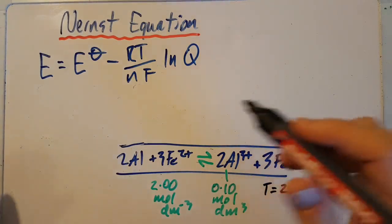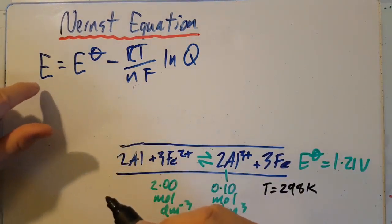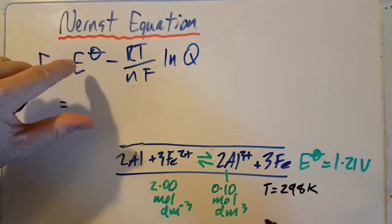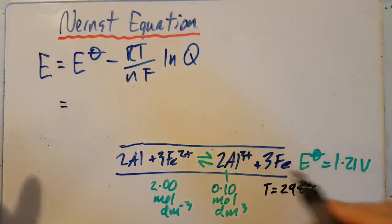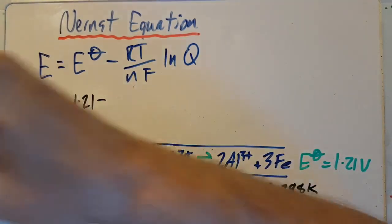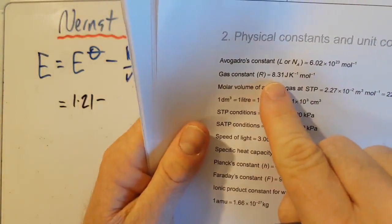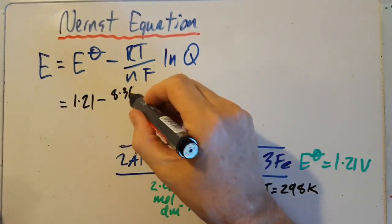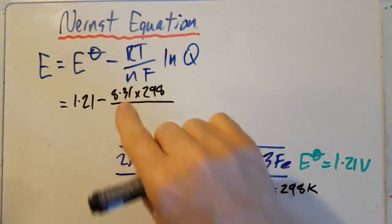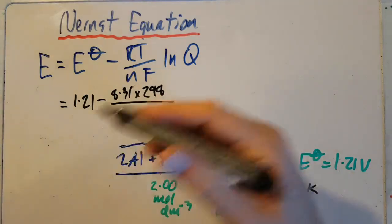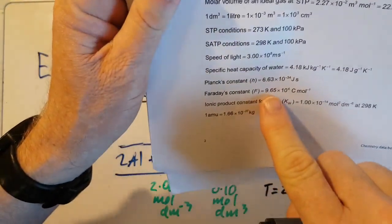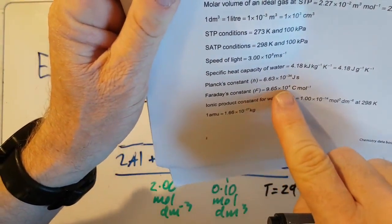All right, so how are we going to do this? E is what I'm trying to find, the new voltage for this cell. That's my standard electrode potential for the cell, which is 1.21. Minus R, which according to the data booklet, the gas constant is 8.31. Multiplied by the temperature given in the question, 298. Divided by the number of electrons involved in the equation, the transferring, and that was 6 electrons. Faraday's constant is 9.65 times 10 to the 4.